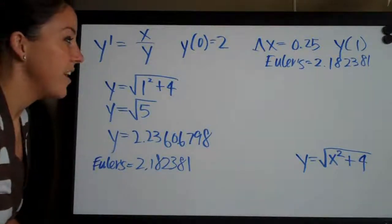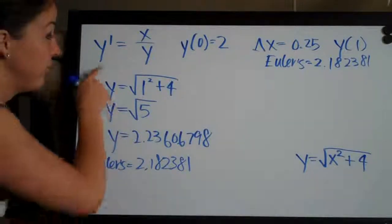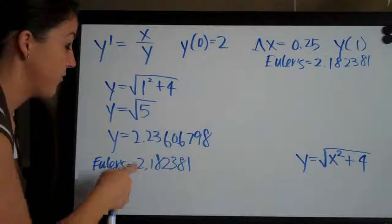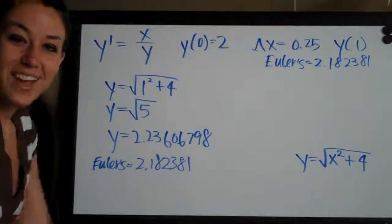So hope that gave you guys some clarification about the difference between actually solving the equation and getting the exact value versus using the Euler's method approximation. See you guys next time. Bye!